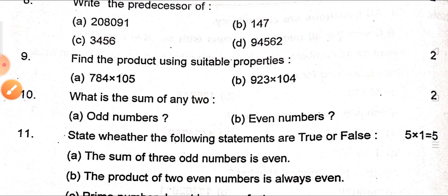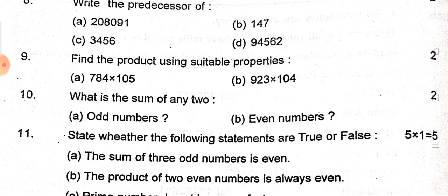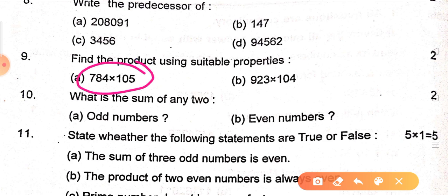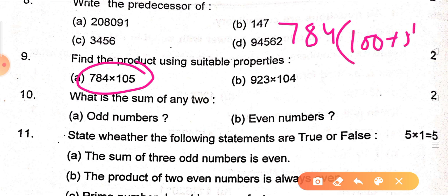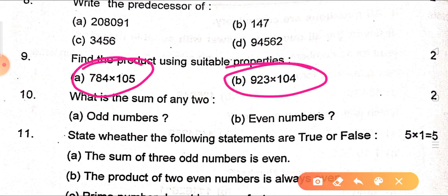Next question: find the product using suitable properties. For 784 × 105, you will use the Distributive property — write it as 784 × (100 + 5), then multiply 784 × 100 = 78,400, and add 784 × 5. Add the two results for the final answer, which you will tell me in the comments section. I won't solve it fully here as I have many videos to cover.